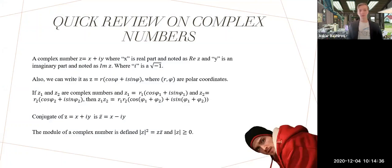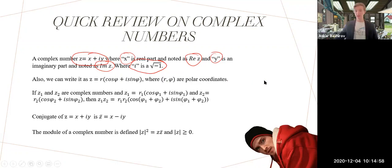Let's start with a quick review on complex numbers. Complex number z can be written as x + iy where x and y are real numbers. x is called the real part and y is called the imaginary part. If you don't remember, i is just one of the square roots of negative one.